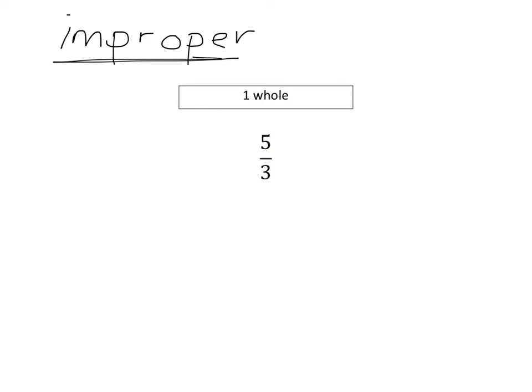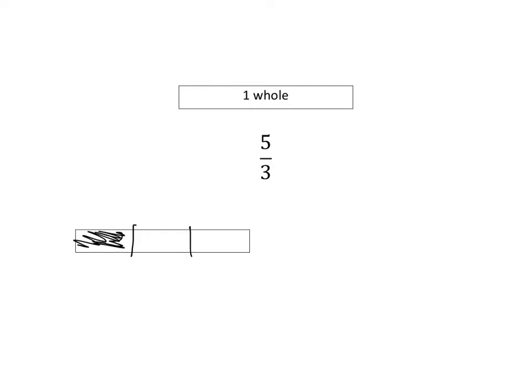Okay, let's have a look at what 5 thirds means. If we've got a whole that looks like that, to get to 5 thirds we really first need to see what a third is, and then we need 5 of them. So let's start by looking at a third. To get a third we've got to cut that whole up into 3 equal parts, and then each of those will be a third.